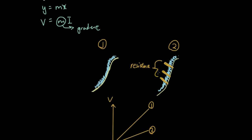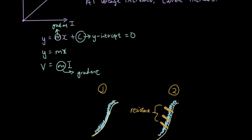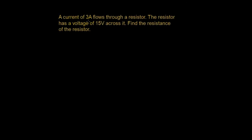So in this situation, if I have fewer tree branches, the water flow will increase. But if I have more tree branches, the water flow will decrease — so if I have more tree branches, the current will decrease. So that is — not the end of this tutorial — because I'm going to give you guys a question to practice. Here's the question: a current of 3 amps flows through a resistor. The resistor has a voltage of 15 volts across it. Find the resistance of the resistor.